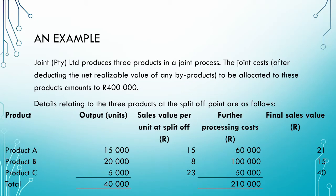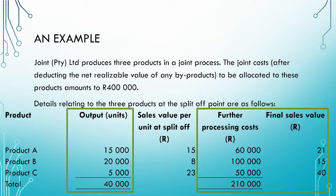We are given details of the three products at the split-off point: the output in units, the sales value per unit at the split-off point, any further processing costs, and the final sales value after further processing. For the net realizable value method, we allocate joint costs based on the total net realizable value at the split-off point, calculated as the final selling price less any further processing costs. Therefore, we are concerned with the output, the further processing costs, and the final sales value — we can ignore the sales value at the split-off point.